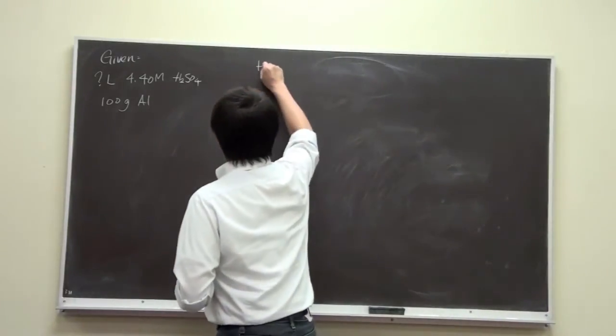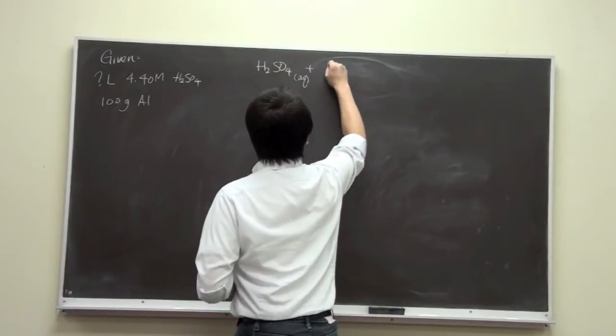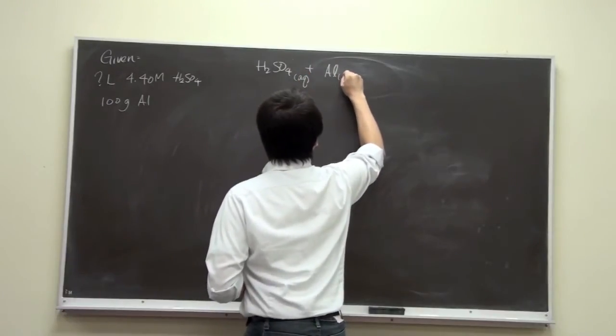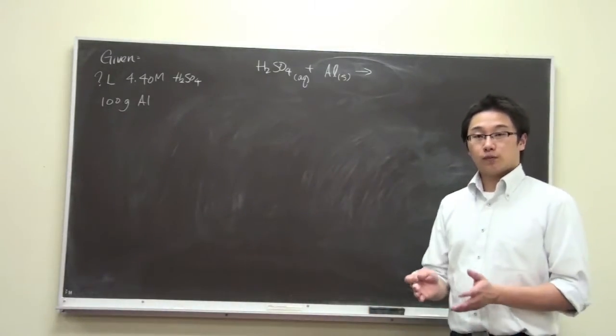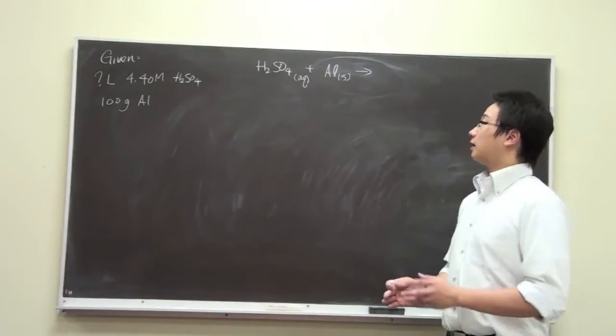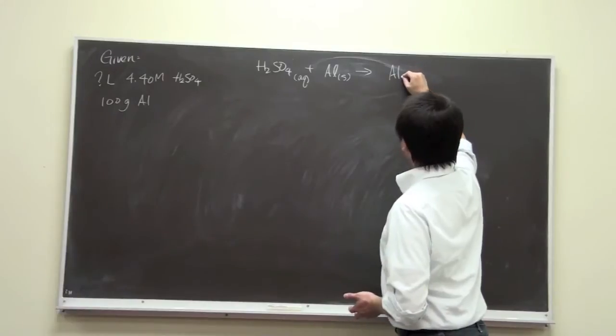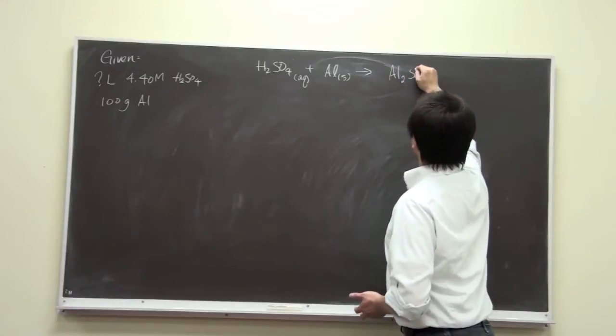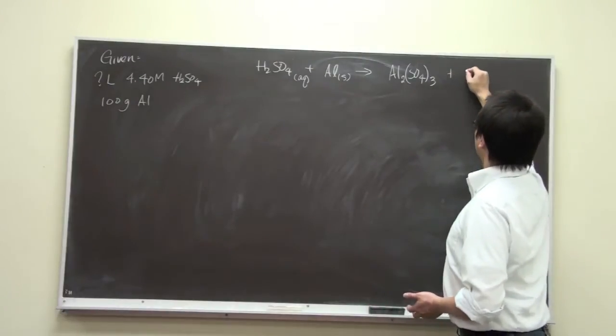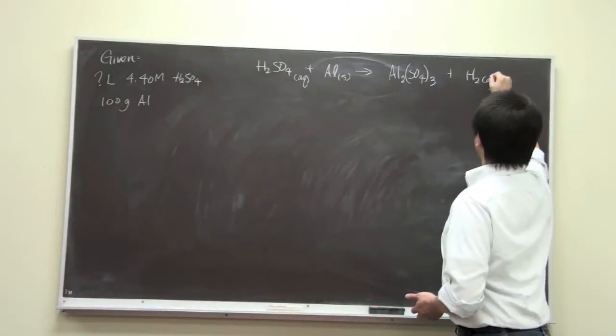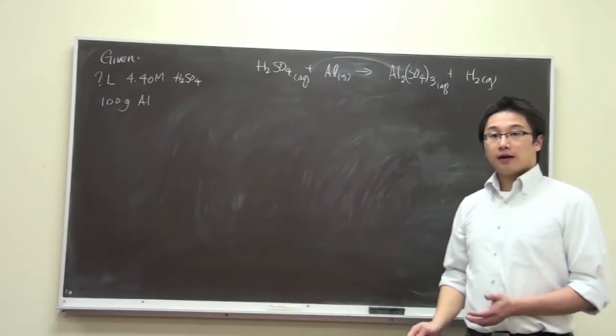So we have H2SO4 plus aluminum. And if you look at the reactants, you should be able to figure out that it is a single replacement reaction. So the product would be aluminum sulfate and hydrogen gas.